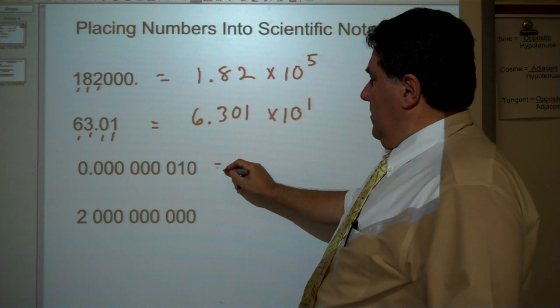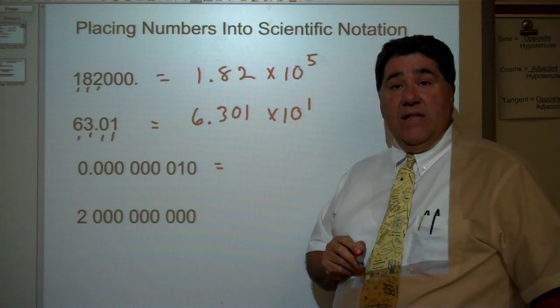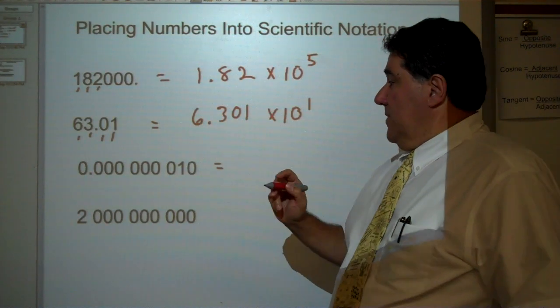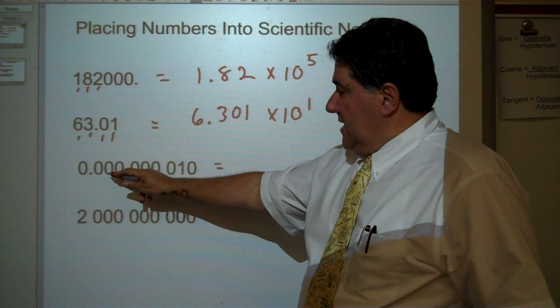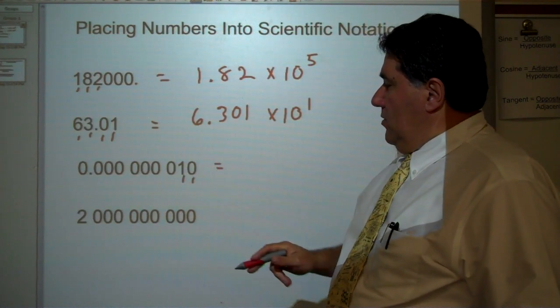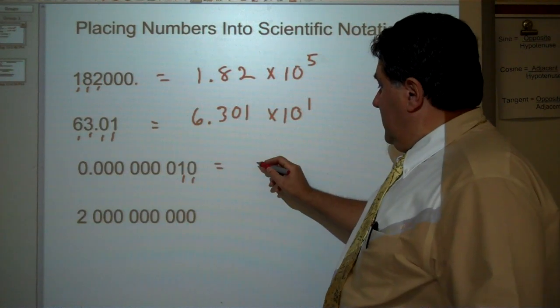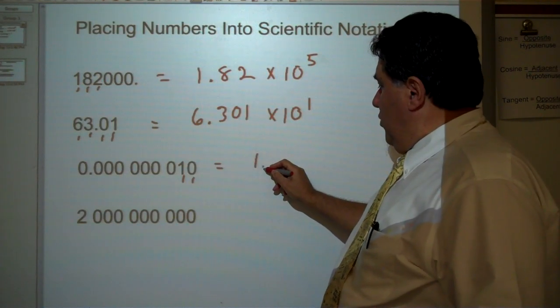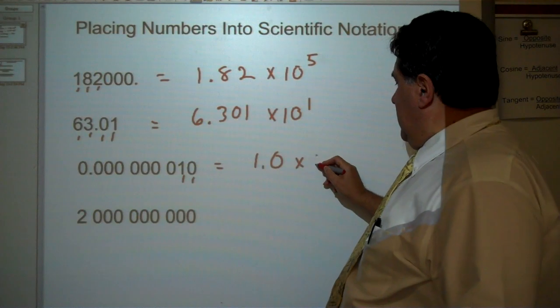Here's a small number. It's much less than 1, so it's going to have a negative exponent. We have how many significant digits? 1, 2. These are the only two significant digits in this number. So the answer is going to be 1.0 times 10.